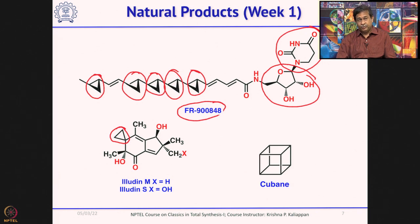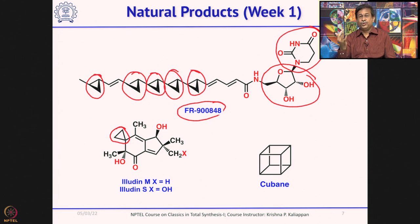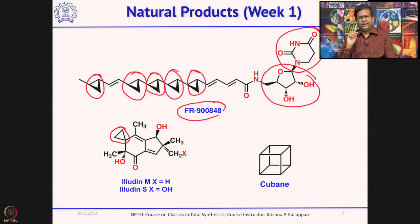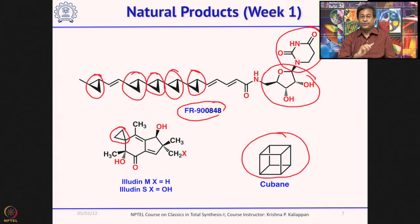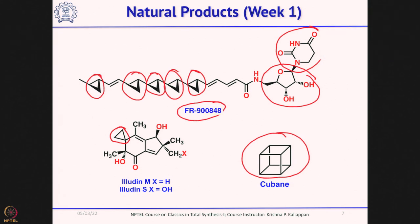Then we move to four-membered rings. We will start with a non-natural product, cubane, which is a highly strained compound. The first synthesis of cubane was reported by Philip Eaton, and it is a very interesting synthesis. We will talk about the synthetic strategy developed by Philip Eaton to synthesize cubane — a milestone in total synthesis.